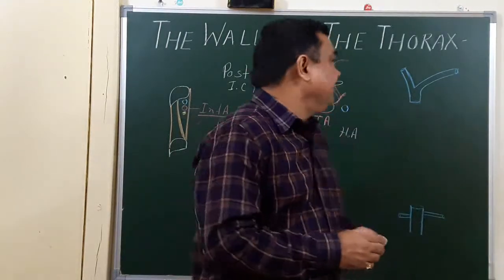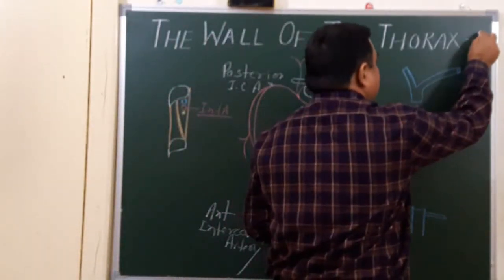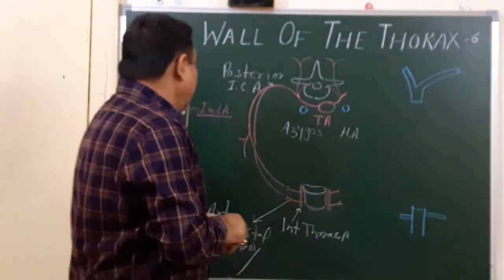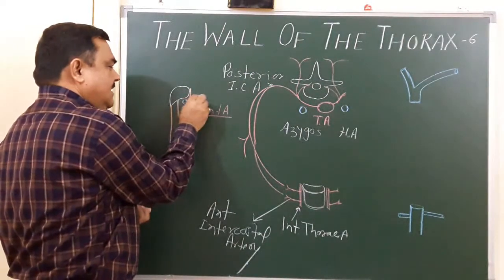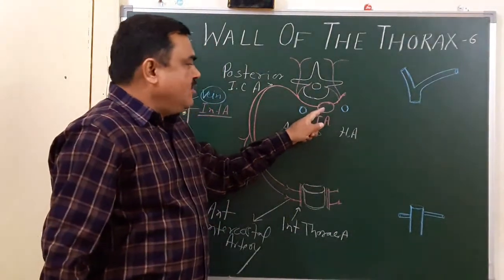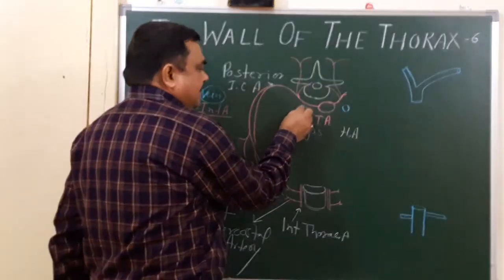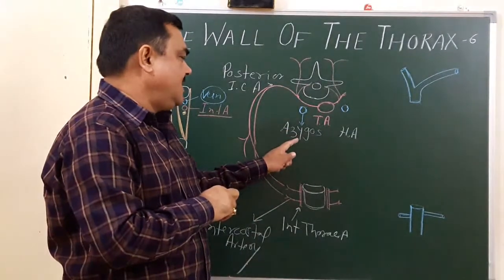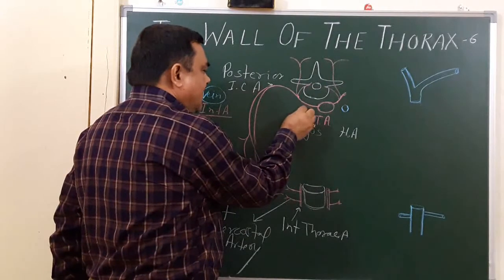Now we discuss the wall of thorax, part 6. In this part we will discuss about the veins. This is the intercostal vein — you have seen this is the nerve, this is the artery, and this is the intercostal vein in this diagram. You have seen this is the thoracic aorta and these are the branches of the thoracic aorta. For each space there is an azygous vein — azygous means unpaired — this is the azygous vein, accompanying the artery.